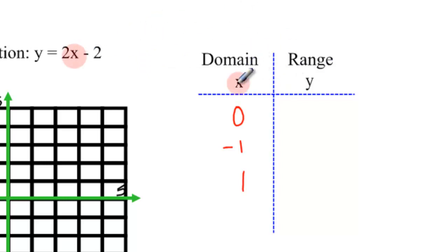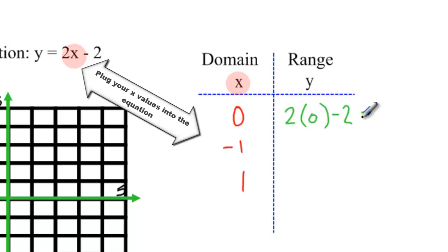You see an equation where it has an x? Well then all you have to do is plug in your x values that you chose and it'll give you your y value. For instance, for the first one, plug in 0 for x. You get 2 times 0 minus 2 which just equals negative 2.